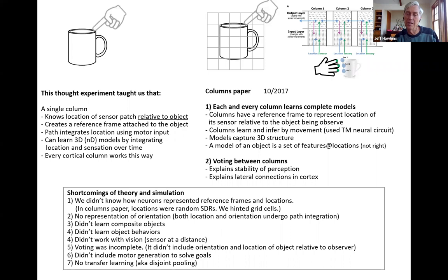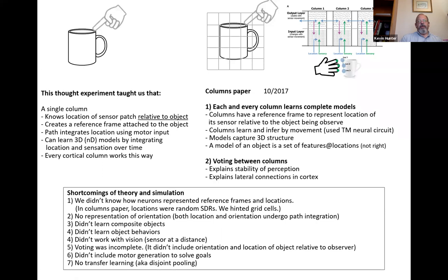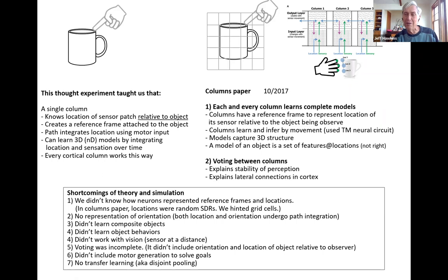So are you talking about directed motion to explore the space? We had nothing in this paper about that. It's a fact that every column has motor output — visual columns can make the eyes move, can make your fingers move. Think about all the things your neocortex does through movement: it generates speech, types on computers, opens doors, cooks on the stove. Ultimately we have to explain all that. It's a big black hole — we didn't talk about motor generation.